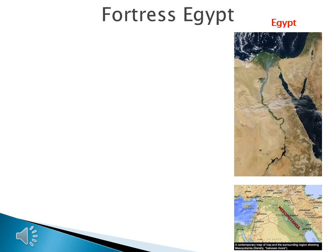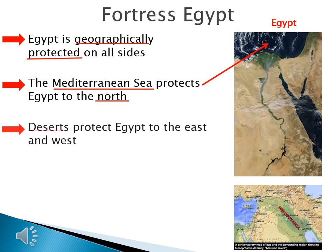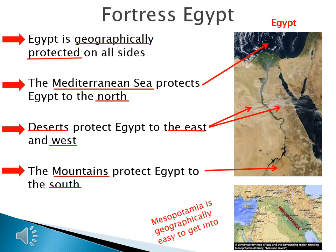Egypt and Mesopotamia geographically are similar — Egypt has a river, Mesopotamia had rivers, and both have good soil. But there is one important difference that makes Egypt stronger than Mesopotamia: Egypt is a fortress geographically, protected on all sides. The Mediterranean Sea protects Egypt to the north, the deserts protect Egypt to the east and west, and the mountains protect Egypt to the south. We've already learned that Mesopotamia is geographically easy to get into, so Egypt is protected from invaders — Mesopotamia, not so much.